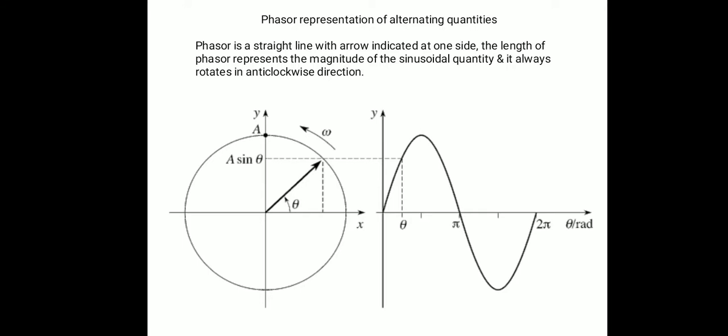What is a phasor? A phasor is a straight line with an arrow indicated at one side. In the phasor diagram on the left hand side of the slide, there are two axes — x axis and y axis — over which one circle is drawn. One bold arrow line is drawn between the x and y axis, and that line makes an inclination angle of theta. That bold line is actually the phasor, and the arrow on top indicates the direction of rotation.